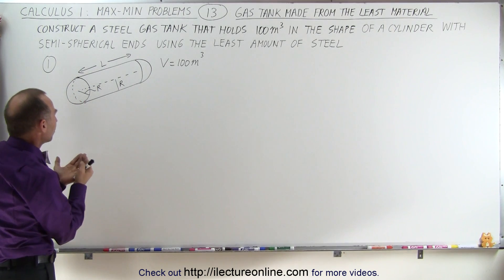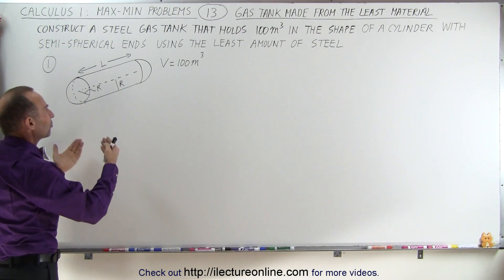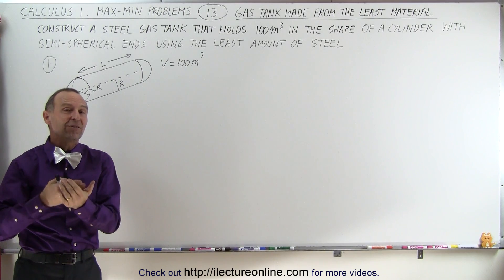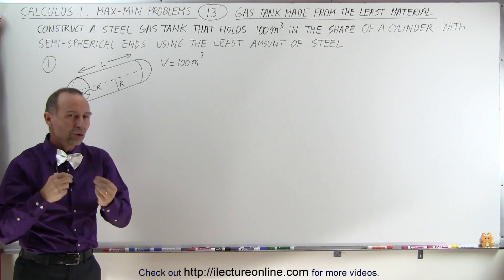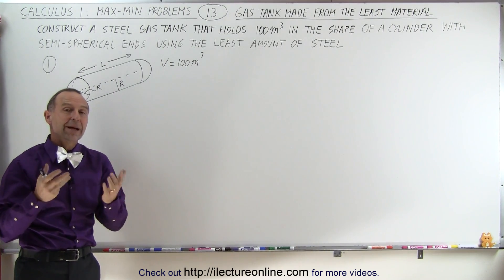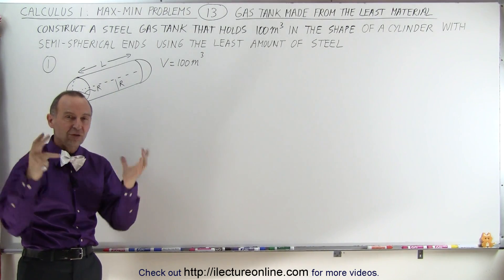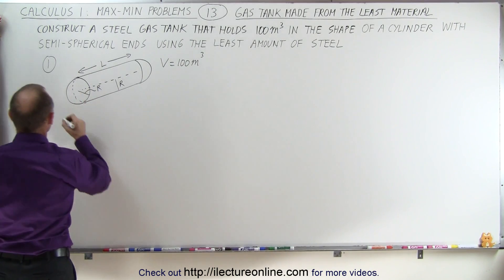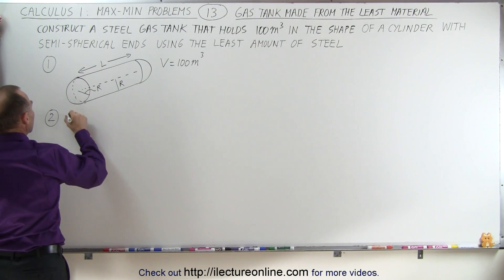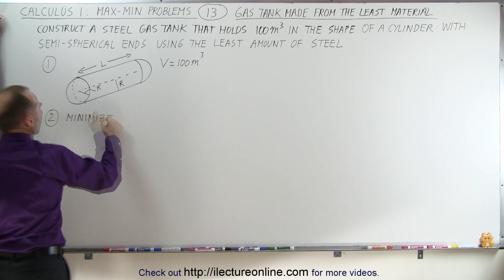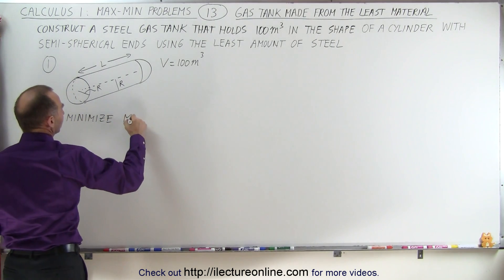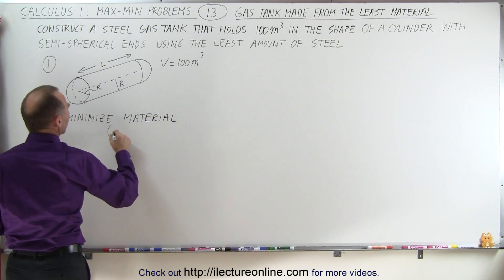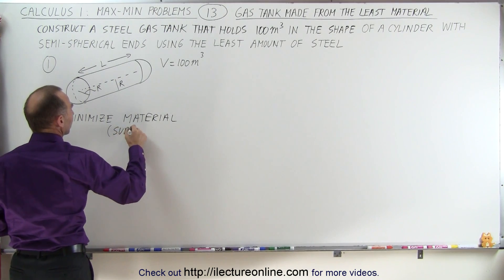Next, we need to determine what we are trying to maximize or minimize. Here we are trying to minimize the amount of material used, which means we are trying to minimize the surface area of that tank.